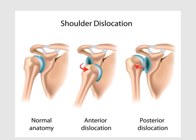Shoulder dislocation is classified into three groups: anterior dislocation, posterior dislocation, and inferior dislocation. In this diagram we can see the normal anatomy of the shoulder joint, where the humerus head rests in the glenoid cavity of the scapula. In anterior joint dislocation, the humerus head is in an anterior relationship to the glenoid cavity. In posterior dislocation, the humerus head is in a posterior relationship to the glenoid cavity.